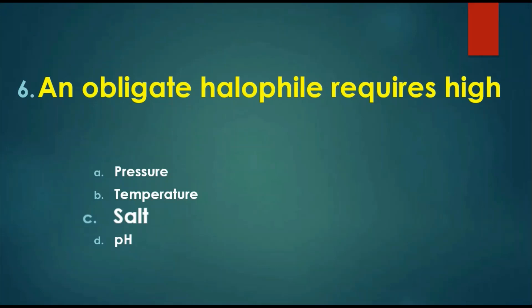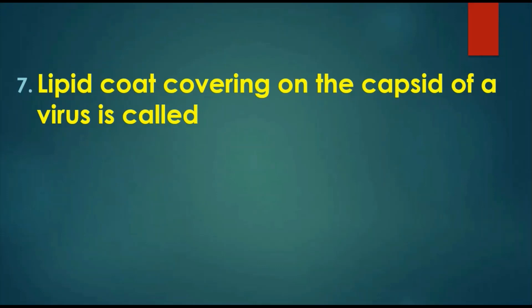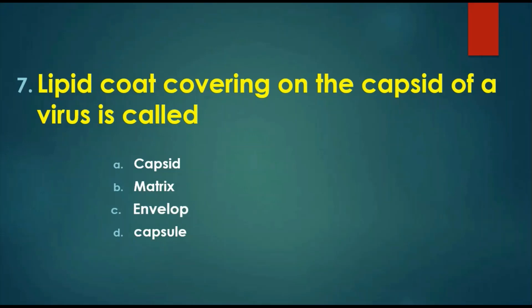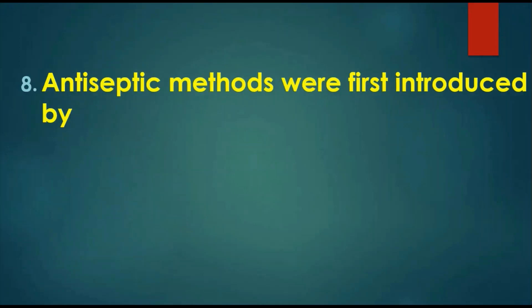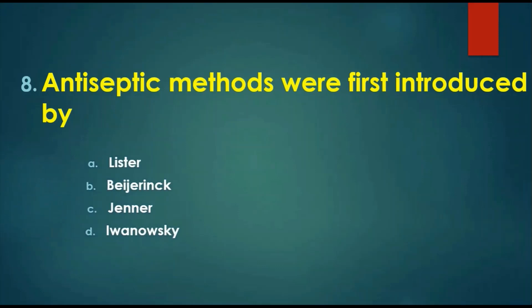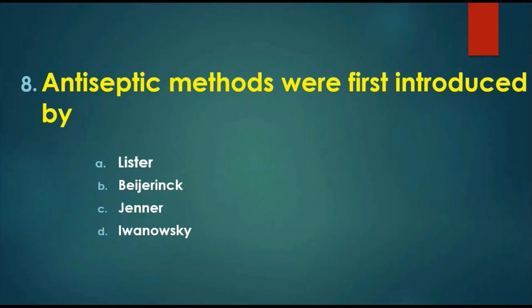Question 7: Lipid coat covering on the capsid of a virus is called — options are: A) capsid, B) matrix, C) envelope, D) capsule. The answer is envelope — the outer lipid covering of the capsid is called the envelope. Question 8: Antiseptic methods were first introduced by — options are: A) Lister (Joseph Lister), B) Beijerinck, C) Edward Jenner, D) Ivanovsky. Beijerinck and Ivanovsky are not related to antiseptic methods. Edward Jenner was involved with vaccination. Joseph Lister is the first person to introduce antiseptic methods, which is why he is called the father of antiseptic surgery.